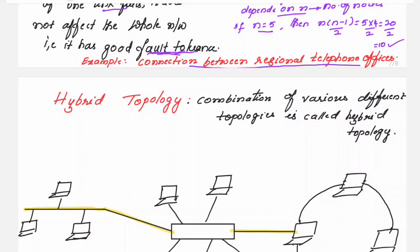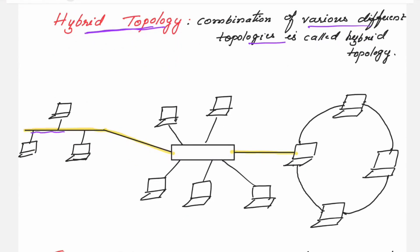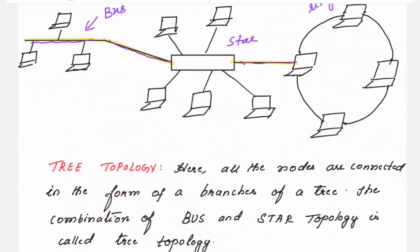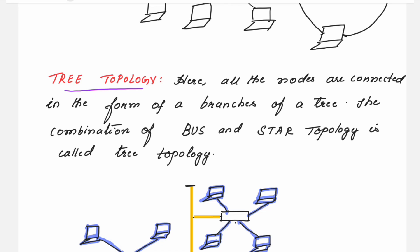Apart from the four main topologies, you should also know about the hybrid topology. Hybrid topology is a combination of various topologies. For example, the bus topology can have a connection with the star topology, and the star topology can in turn have a connection with the ring topology. So a combination of various topologies is called the hybrid topology. The other one you should know is the tree topology, where all the nodes are connected in the form of branches of a tree. The combination of bus and star topology is called the tree topology.